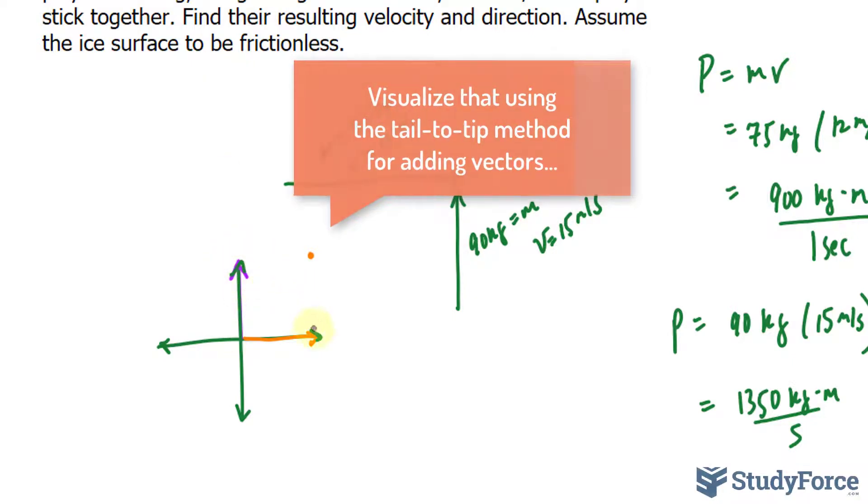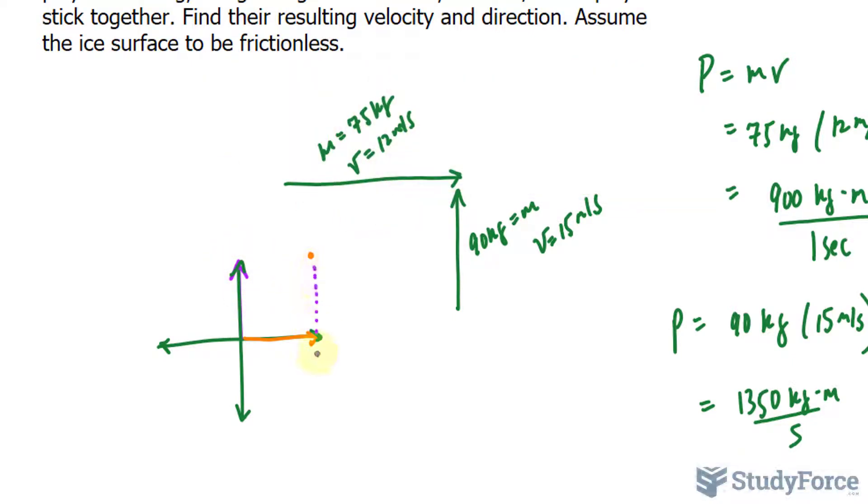Now to add them up, just pretend that we shifted this purple vector at its tip and we created a resultant vector to this point here. The magnitude of this orange one we found to be 900 and the magnitude of this purple one was 1350.